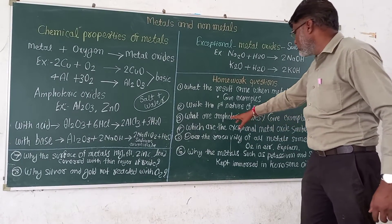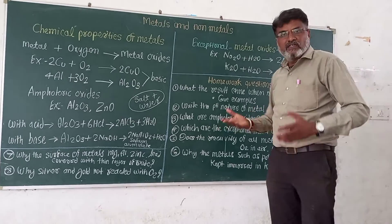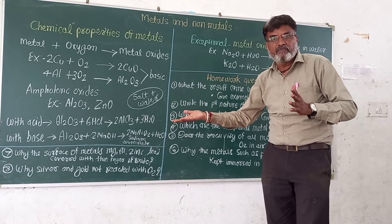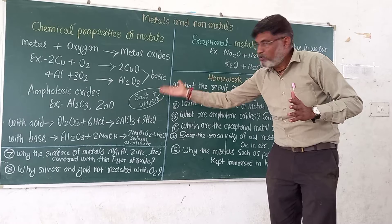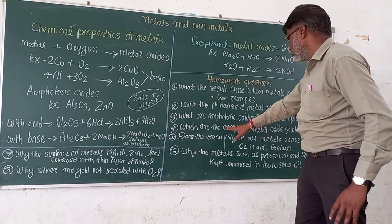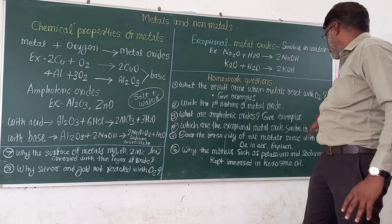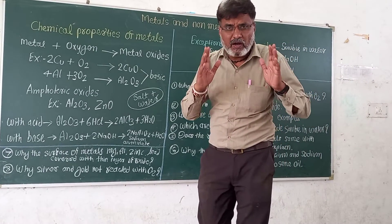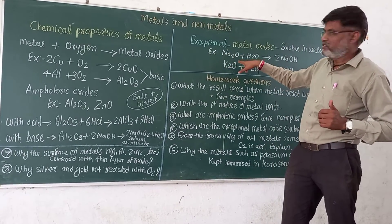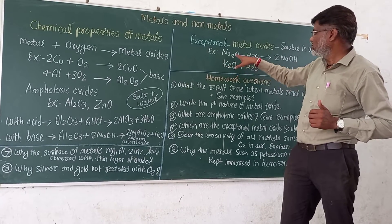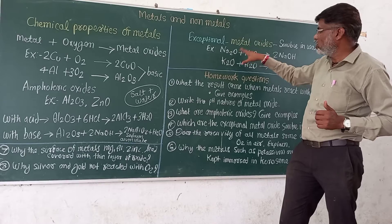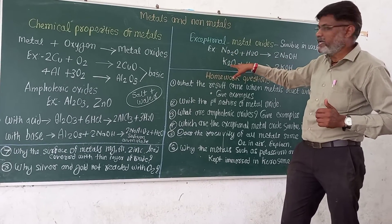Next question: what are amphoteric oxides? Amphoteric oxides react with both acids and bases, and they form salt and water. An example is given here. Which are the exceptional metal oxides that are soluble in water? Maximum metal oxides are insoluble in water. The exceptions are sodium oxide and potassium oxide — these are soluble in water.